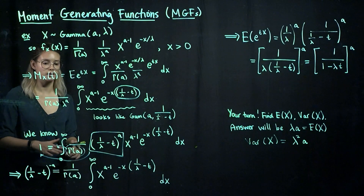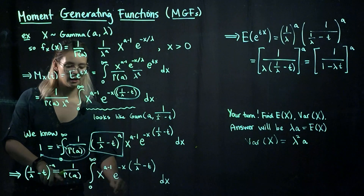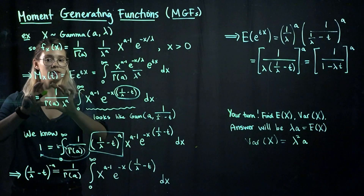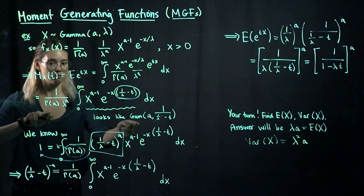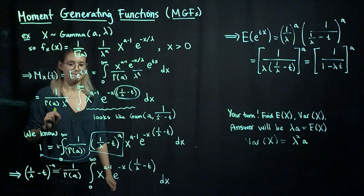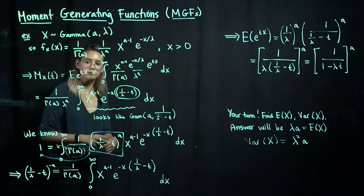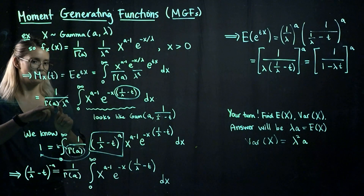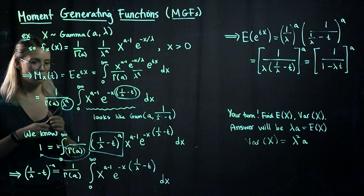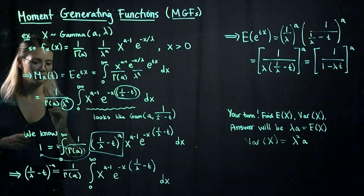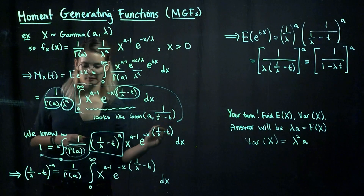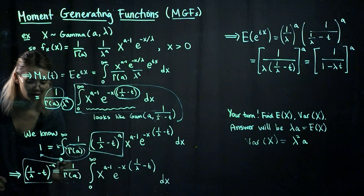The right-hand side here looks just like what we have in our MGF integral. So this equation continues by equating that integral to 1 over lambda minus t to the negative a. Going ahead with the MGF, we still have the outer piece we pulled out earlier — we cannot forget to hold on to that — but we are replacing the integral with that result.